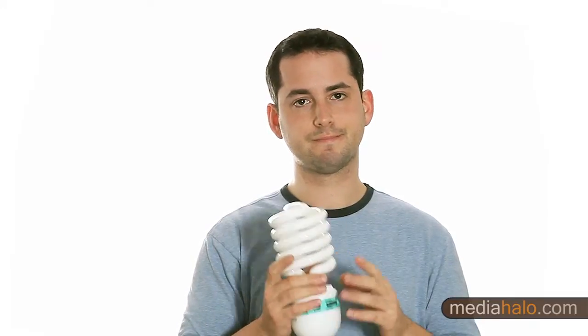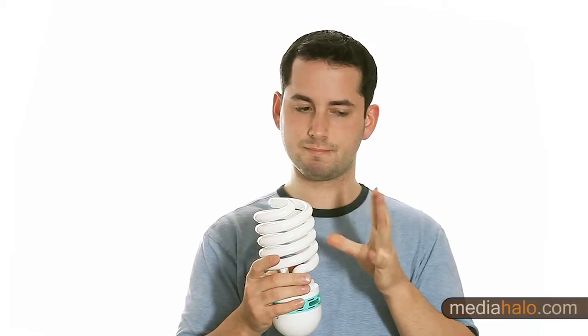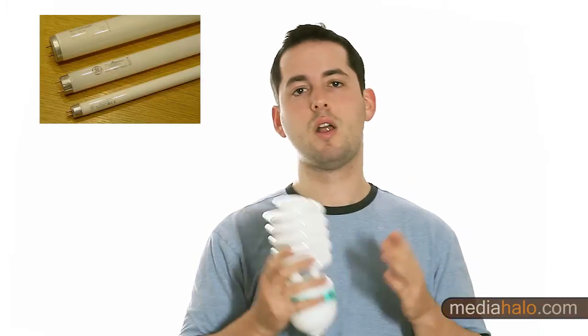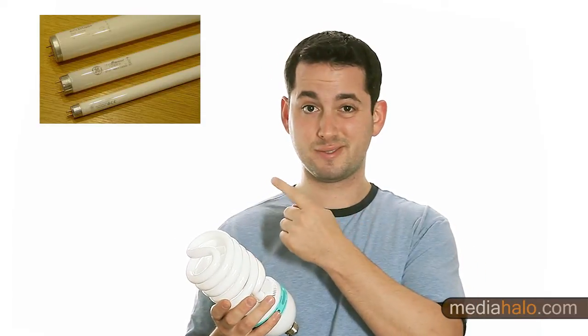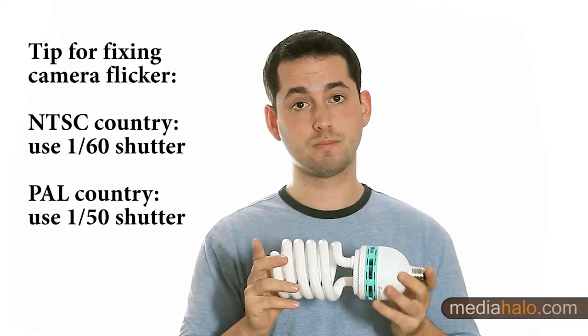One other thing to note is that CFLs use an electronic ballast, which should keep any flickering issues at bay. But if you go for traditional tube fluorescent lighting, you'll need to be more careful because they usually use the older magnetic ballasts, which can be very flickery, and that is no good. So remember, electronic good, magnetic bad.